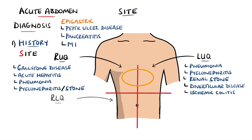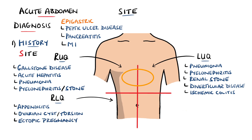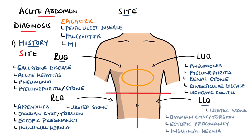Pain in the right lower quadrant may indicate appendicitis. Note that appendicitis pain can also depend on the position of the appendix in that particular patient, as well as gynecological issues such as rupture of an ovarian cyst, ovarian torsion, or an ectopic pregnancy. Others include inguinal hernias or a ureteric stone. The left lower quadrant may also have similar conditions, this time including diverticular disease.